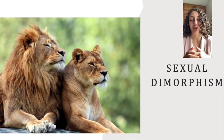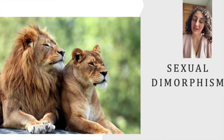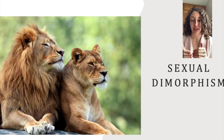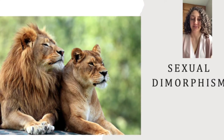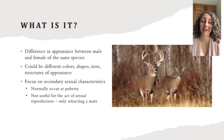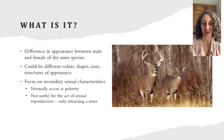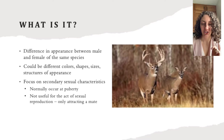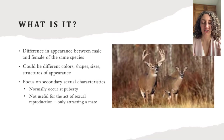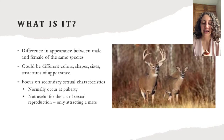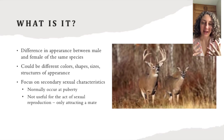I'm going to go through the reasons why sexual dimorphism is so important, the different types, and what it is. Secondary sexual characteristics are the difference in appearance between a male and a female of the same species. This could be different colors, different shapes, or different structures on their bodies — anything that will help attract a mate.